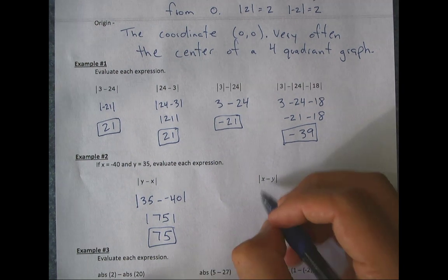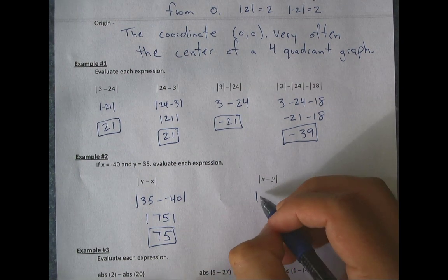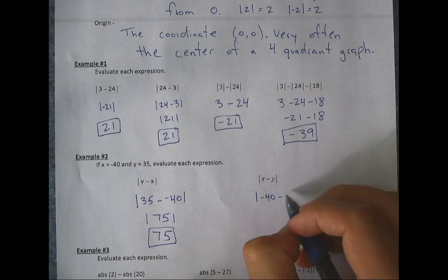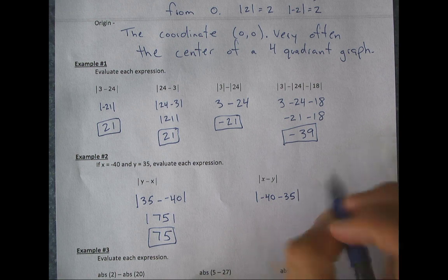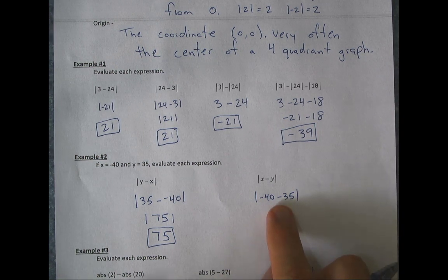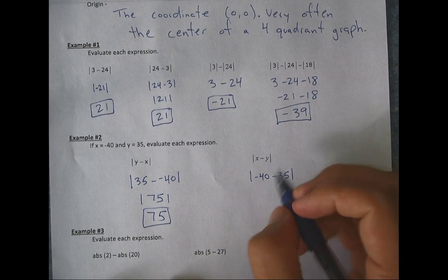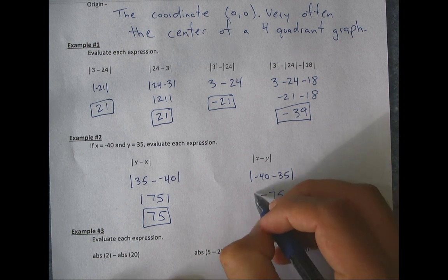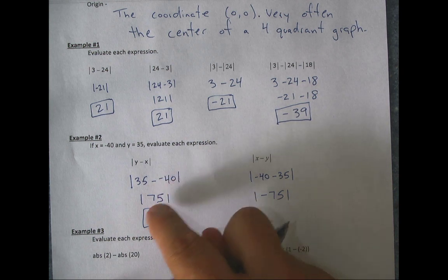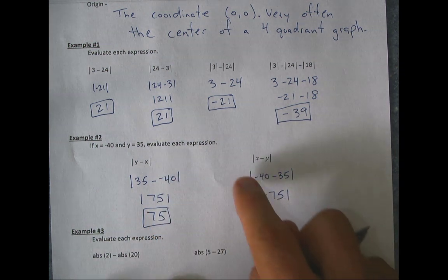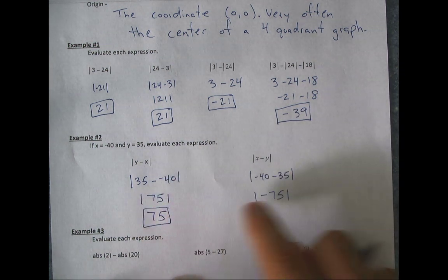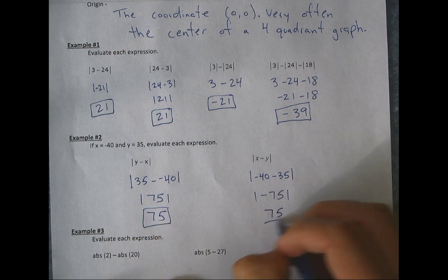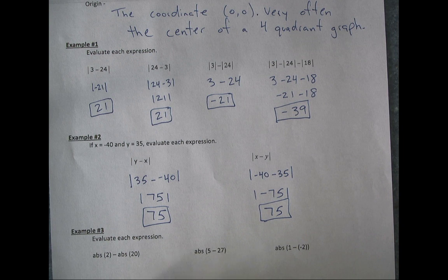Now let's reverse the order: |x − y| = |−40 − 35| = |−75|. In this case we got a negative inside, whereas before we got a positive. But when we take the absolute value of −75, we end up with the same answer: 75.